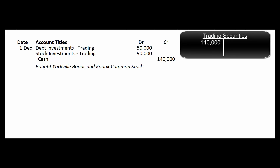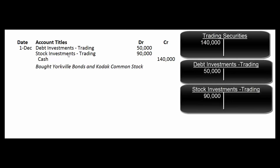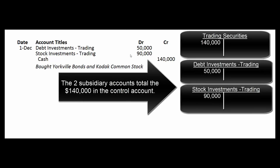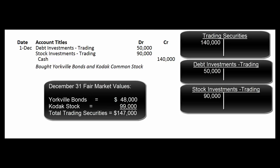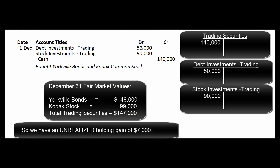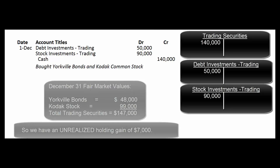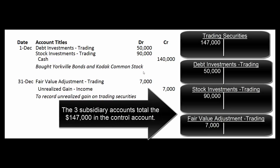Let's say our company has a control account called Trading Securities, with sub-accounts for debt investments and stock investments. On December 1st, we buy some Yorkville bonds and some Kodak stock, paying $140,000. Then on December 31st, we check and discover the Yorkville bonds are now worth $48,000 and the stock is worth $99,000 — a total portfolio value of $147,000. We haven't sold anything, but we have a $7,000 unrealized gain, so we increase the portfolio with a $7,000 debit to the fair value adjustment account.